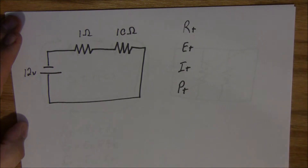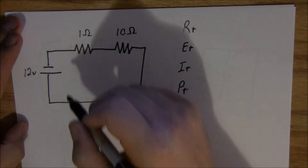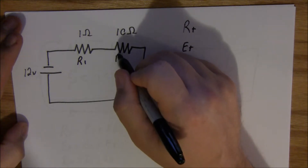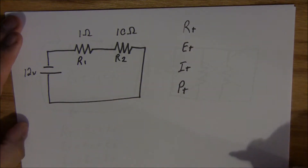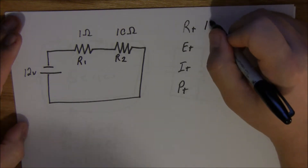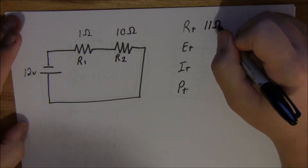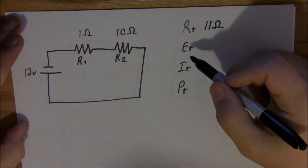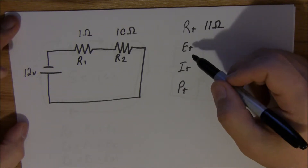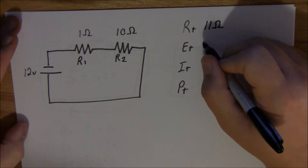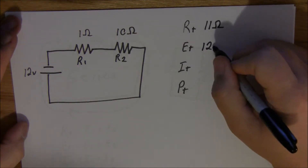Now resistance is R1 plus R2. If you're ever looking at a schematic, they just go in order — that's resistor 1, that's resistor 2. So in this case we have 10 plus 1, giving us a total resistance of 11 ohms. Now your voltage total — we already know what the total voltage is. The total voltage is your source voltage, what's going into the circuit: 12 volts.